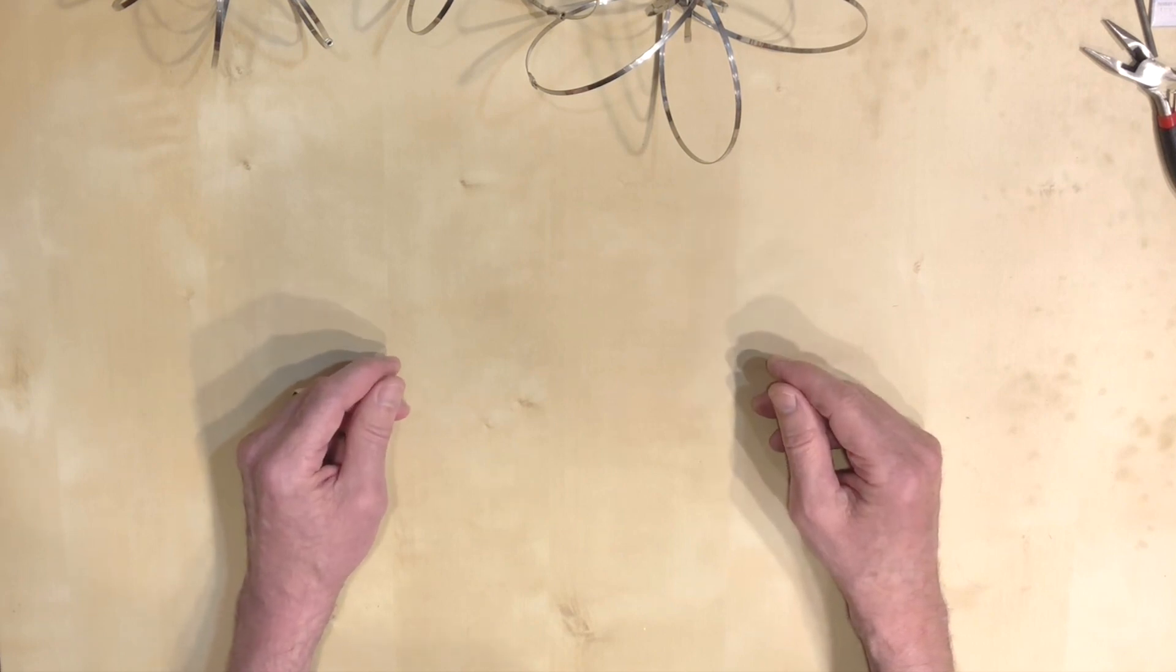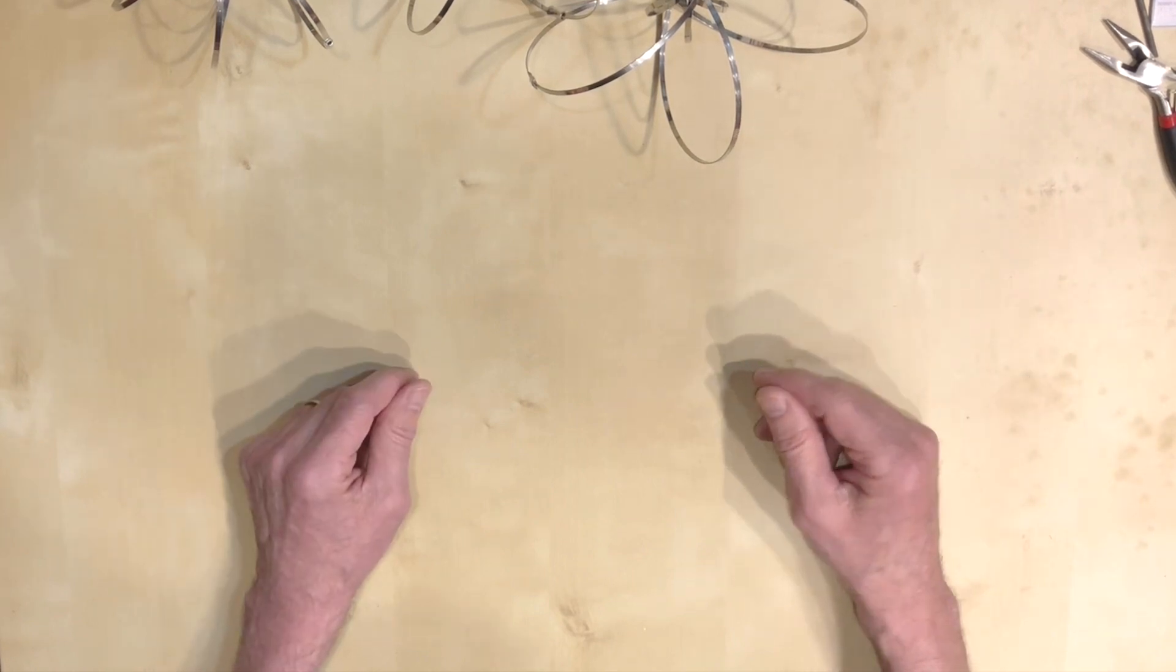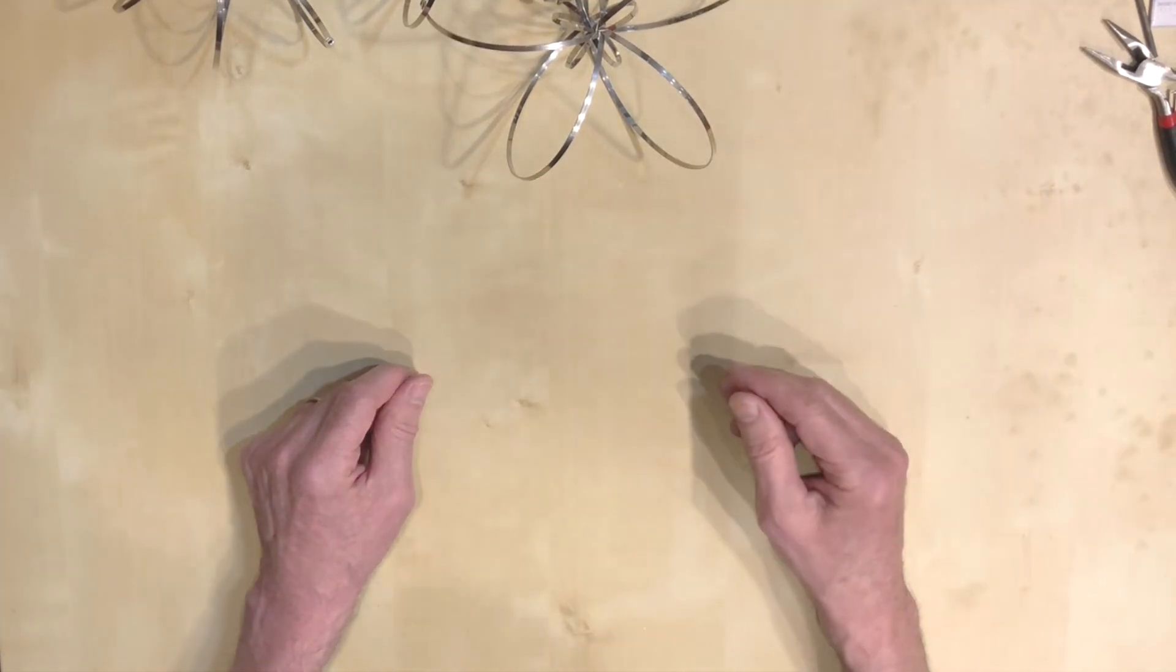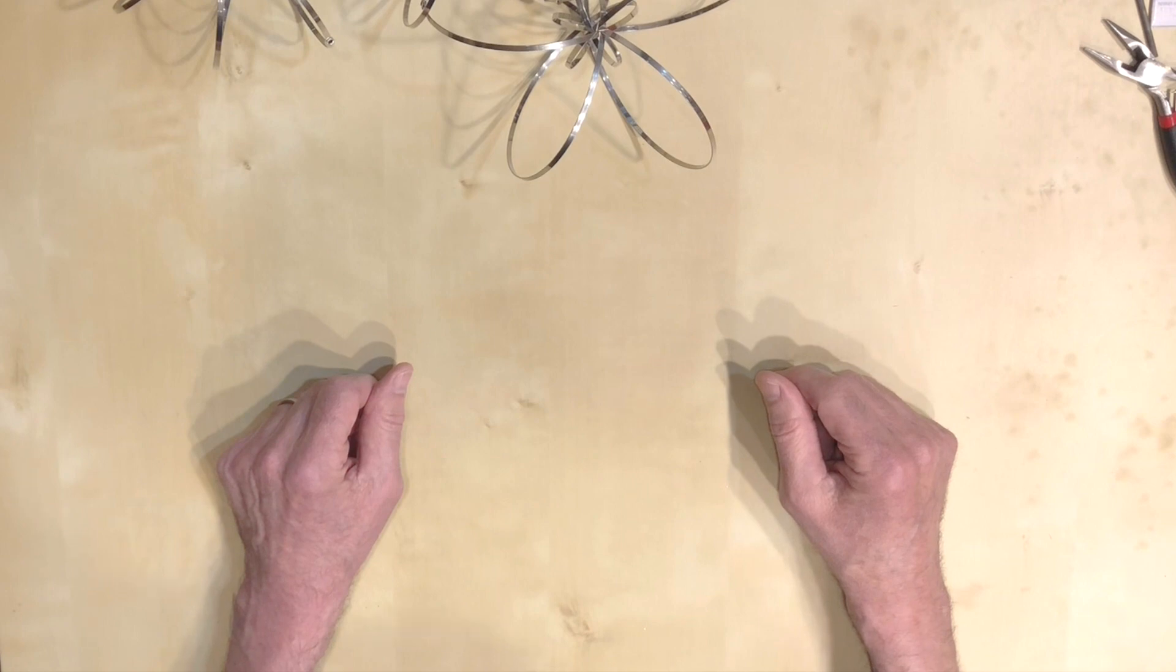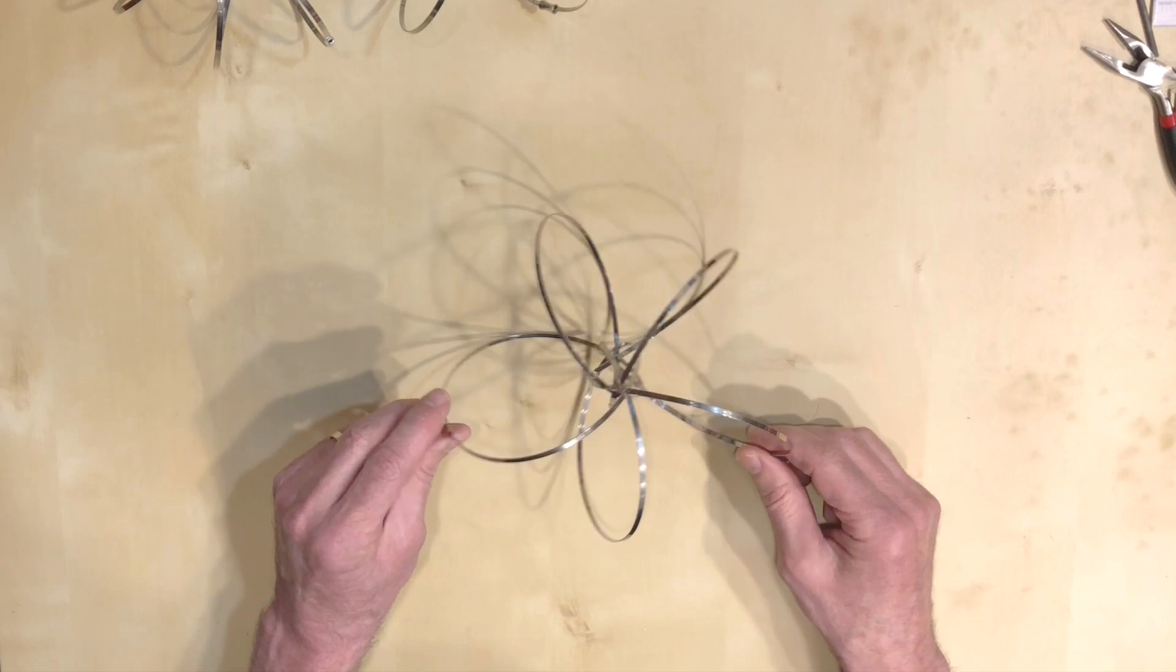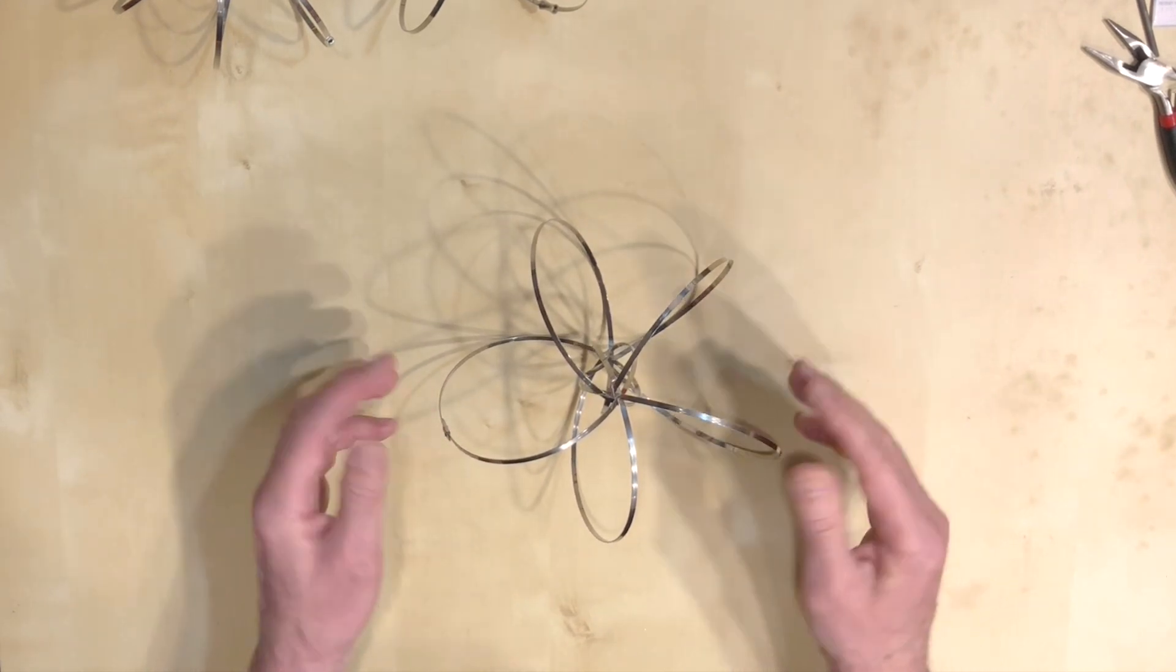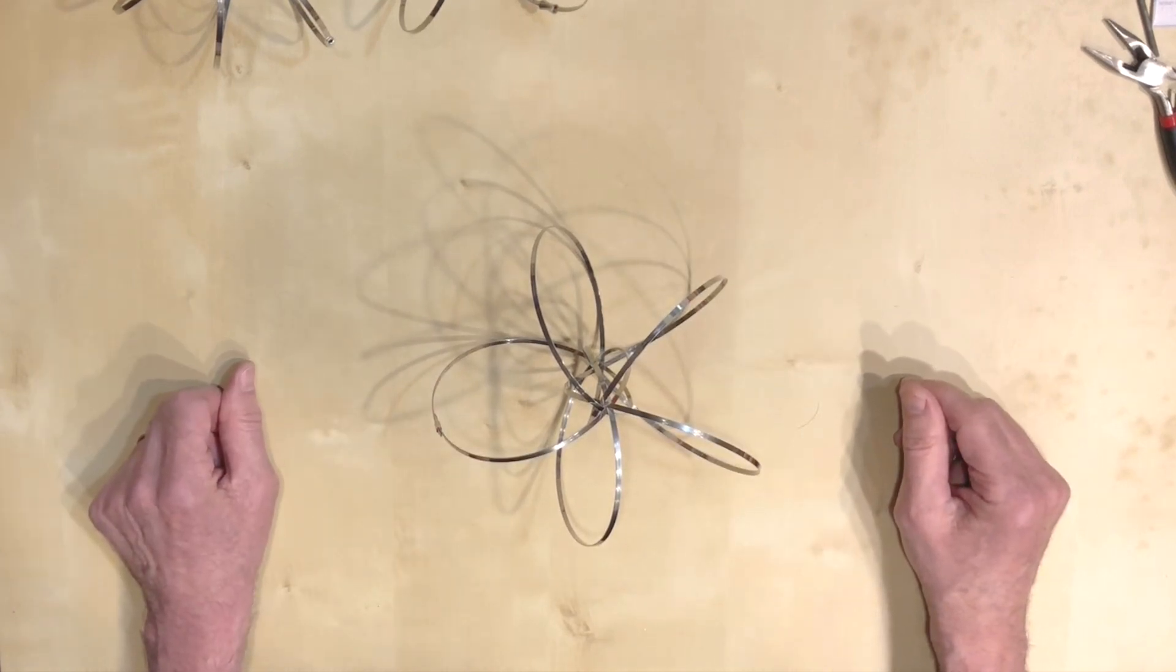So for now I suggest you stick with this n, n+1 torus knots. They are the easiest to build and easier to play with. So have fun making some knots. Thank you.